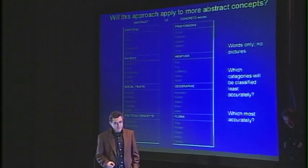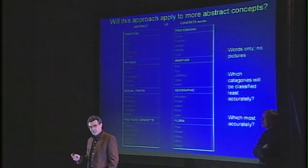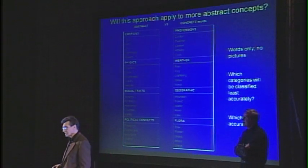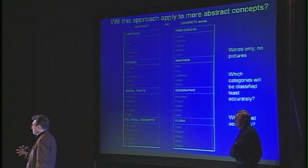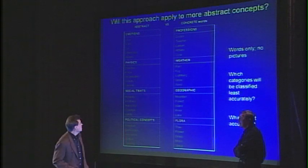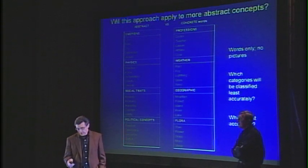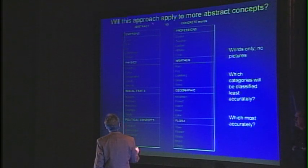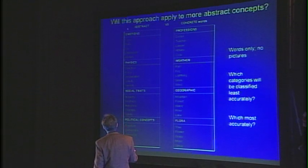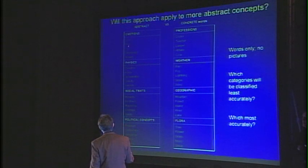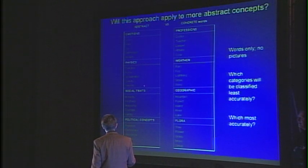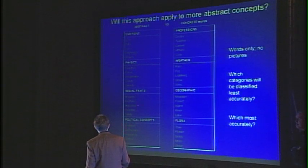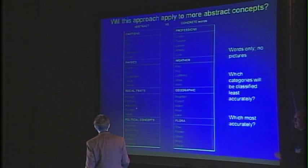We weren't satisfied with just knowing how hammers and telephones are represented. We wanted to go on and ask about more abstract ideas. Could we get the signature of abstract ideas like emotion — love, hate, envy, depression, anxiety — or social traits like honesty, kindness, hypocrisy, courage, vanity?